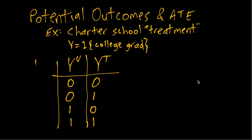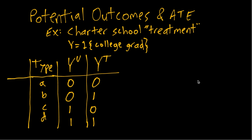We can think of these as four different types: type A, type B, type C, and type D. Within each type, individuals can differ in other ways — families, parents, other activities — but they share the same potential outcomes. Just for a concrete example, we can imagine the probabilities for each type are 0.3, 0.3, 0.1, and 0.3.